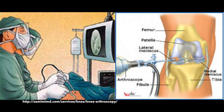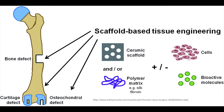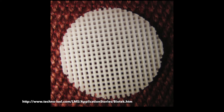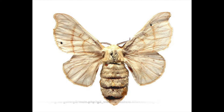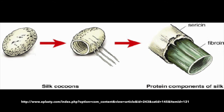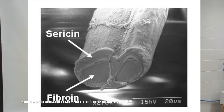Surgical procedures are performed every day to replace and repair damaged tissue during trauma and disease. The goal of this developing field is to regenerate these damaged tissues by using scaffold biomaterials to combine with cells from the body. Silk fibroin from the Bombyx Mori silkworm possesses unique mechanical and biological properties which make it a promising scaffold to be used in tissue engineering applications.